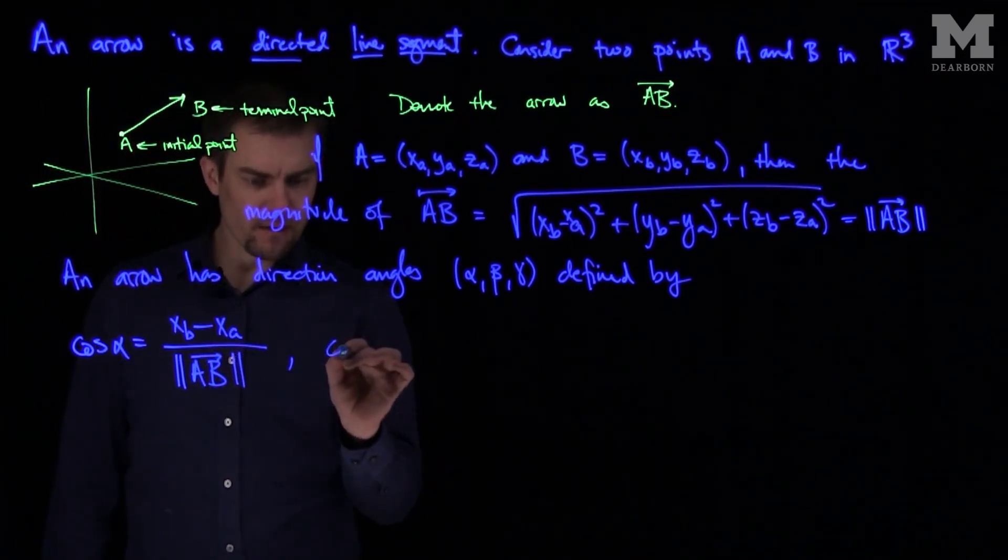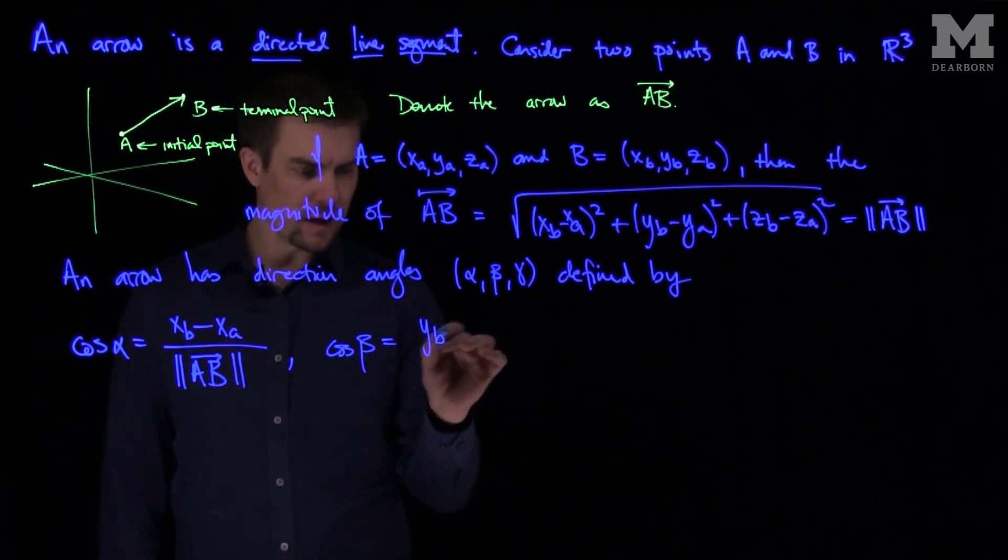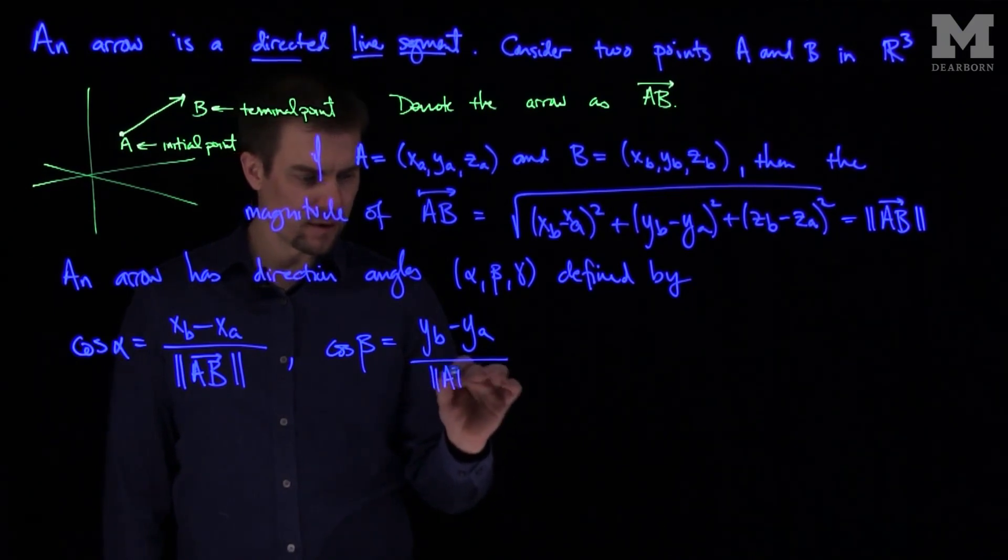To find the cosine of beta we'll look at the difference (YB minus YA) over the magnitude of the arrow.